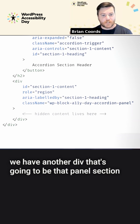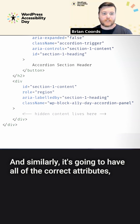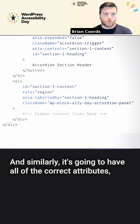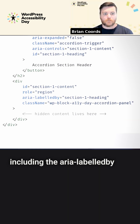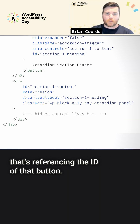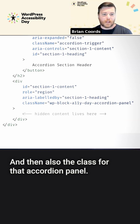Starting at line 13, we have another div — that's going to be that panel section. Similarly, it's going to have all of the correct attributes, including aria-labelledby referencing the ID of that button, and also the class for that accordion panel.